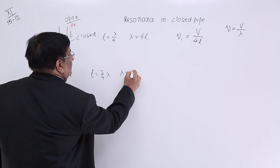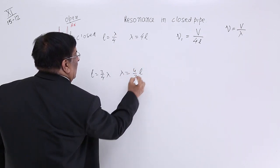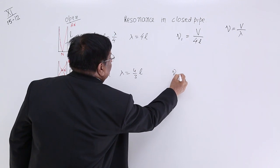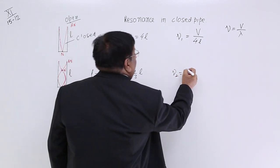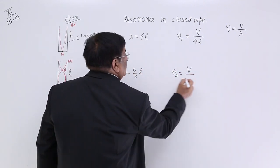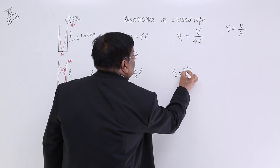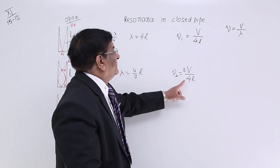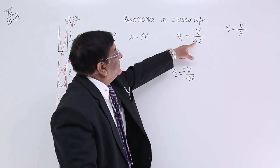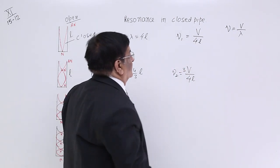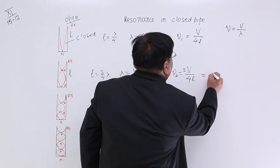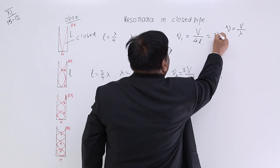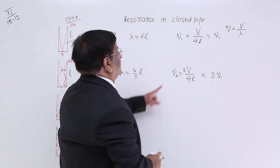So lambda is equal to 4 upon 3L. So frequency in this case is equal to V upon lambda 4 upon 3L. And compare the two. This frequency will be 3 times this frequency is equal to 3ν₁. This is ν₁. This is 3ν₁.